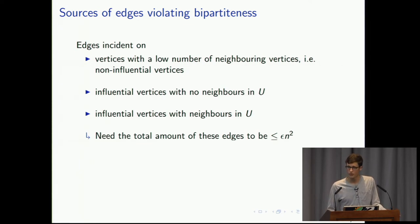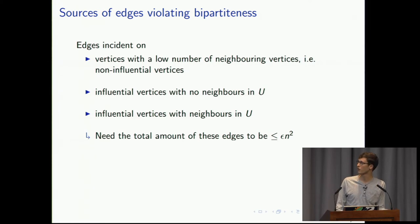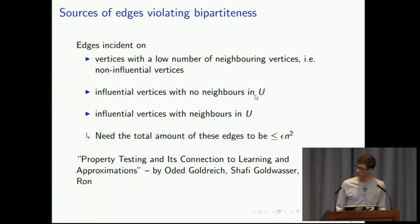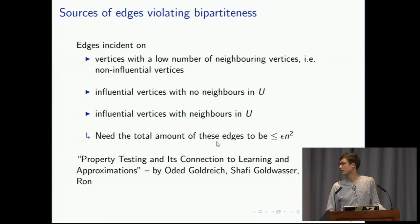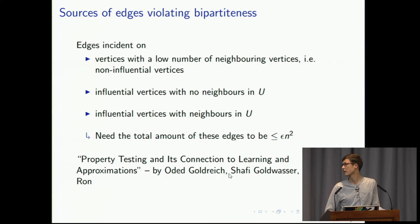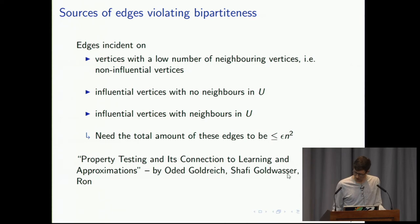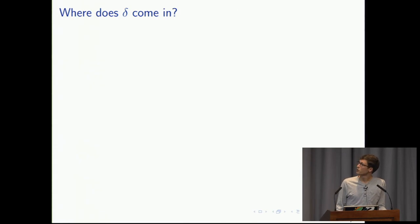This should be enough to understand the proof if you want to read it yourself. All that's left are some technical bits showing that there will be enough influential vertices in U with high enough probability. If you want to read it further, it's in a paper by Goldreich, Schaffee, Goldwasser, and Dana Ron.